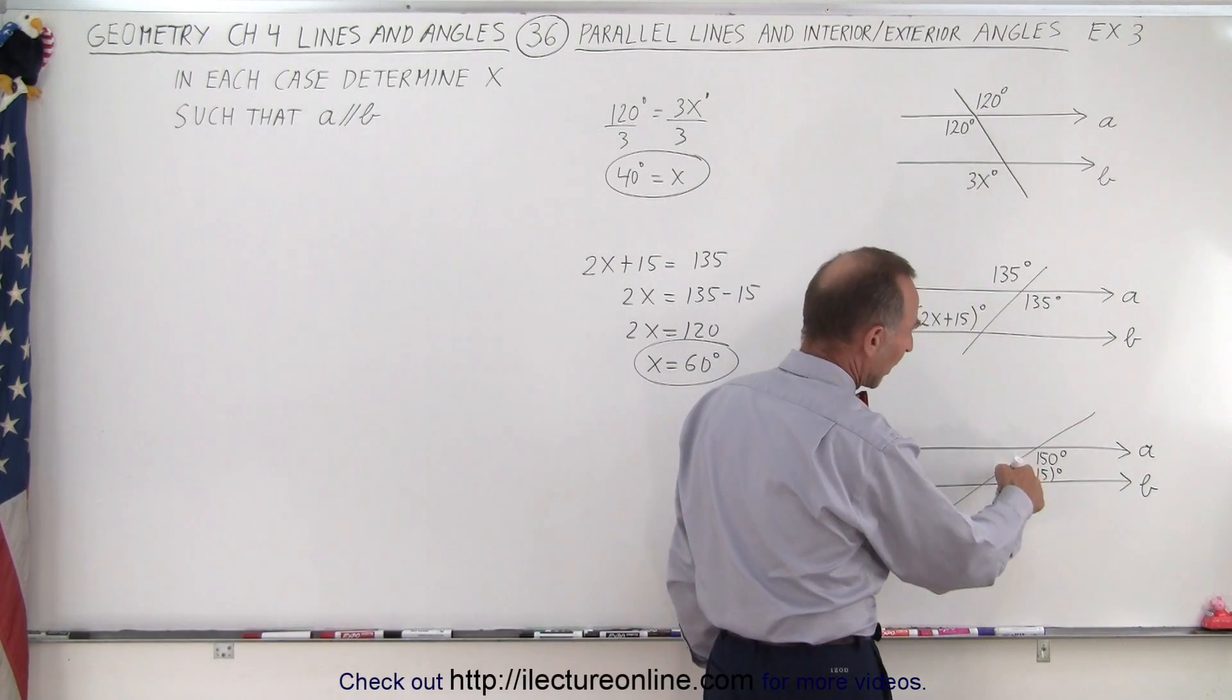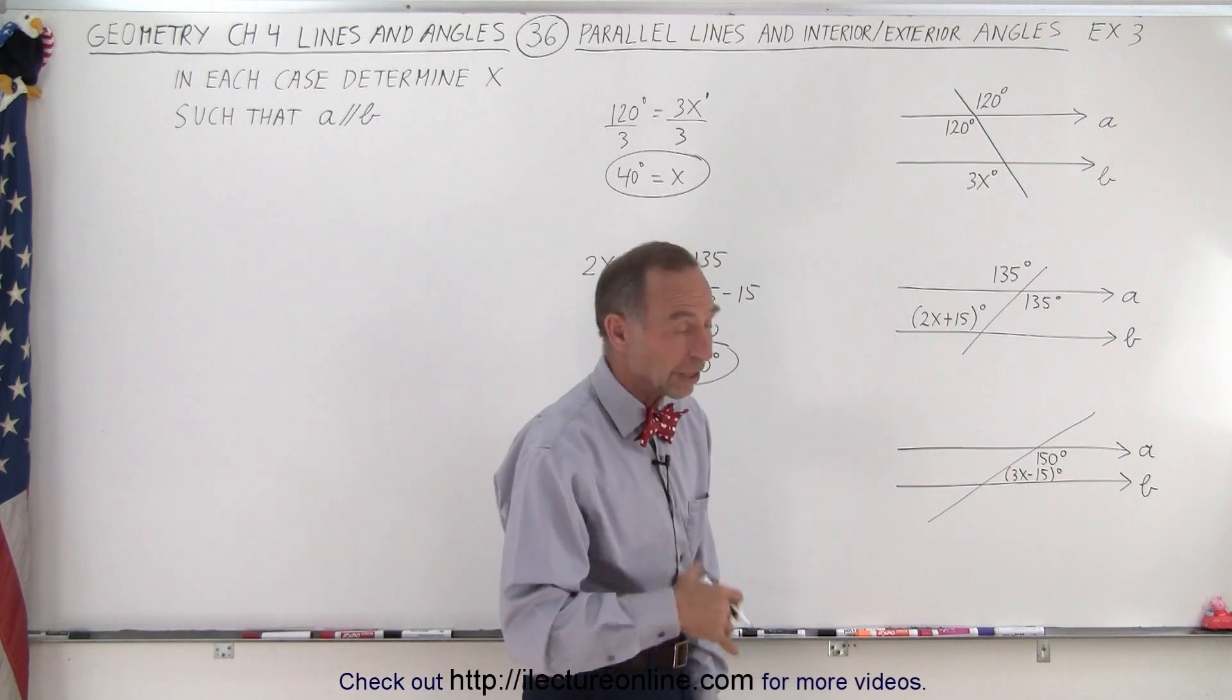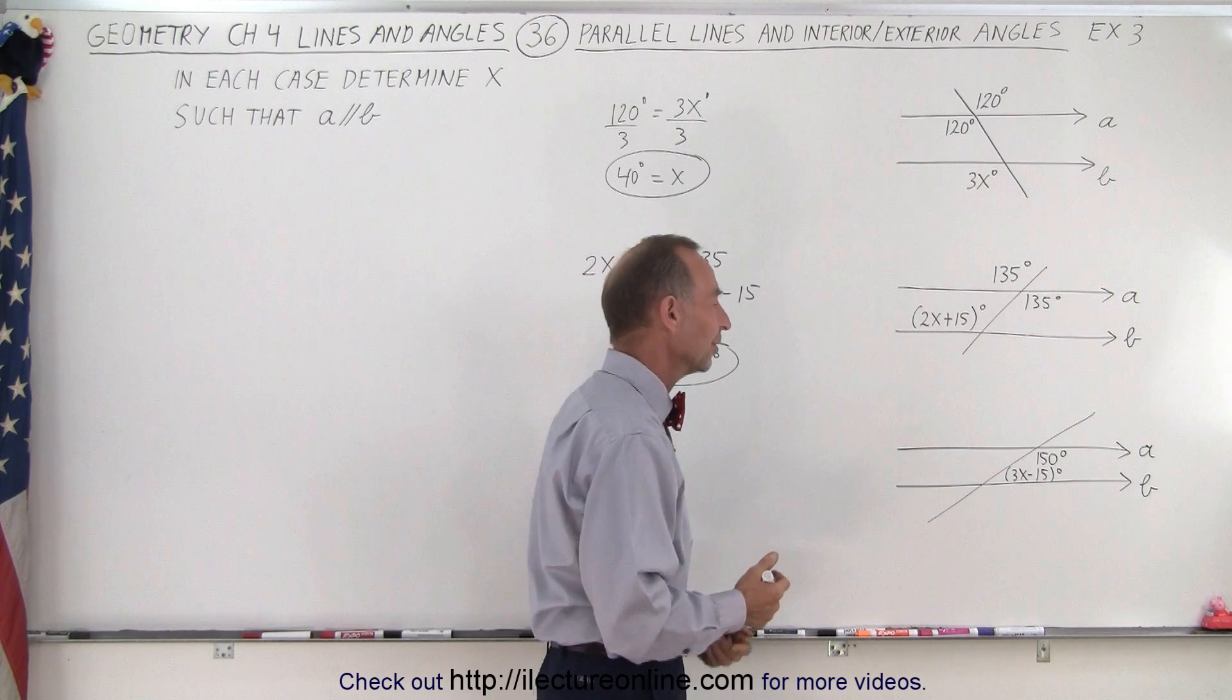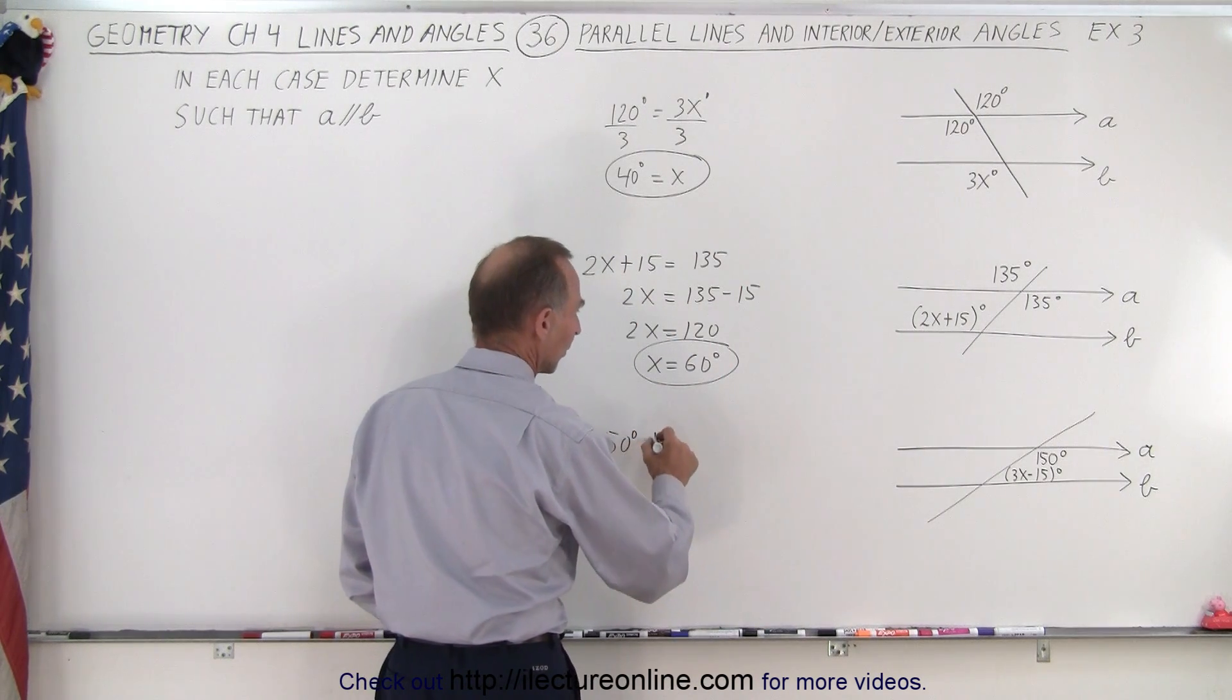So in this third case right here we can see that we have two consecutive interior angles and we know that they are supplementary, so they must add up to 180 degrees. So we can say that 150 degrees plus 3x minus 15 degrees must be equal to 180 degrees.